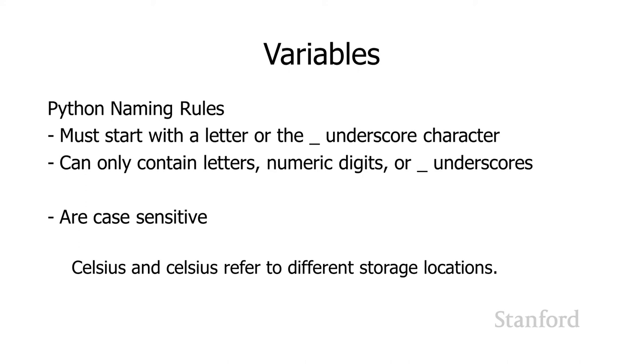Anytime you're working with variables in a programming language, you need to know what the rules are for how you can name those variables. Here are the rules in Python. Your variable names must start with a letter or the underscore character. They can only contain letters, numeric digits, in other words 0 through 9, or underscores. So you can't have dashes. You can't have spaces. You certainly can't have any of the punctuation symbols. Just start it with a letter and mix letters and numbers and underscores.